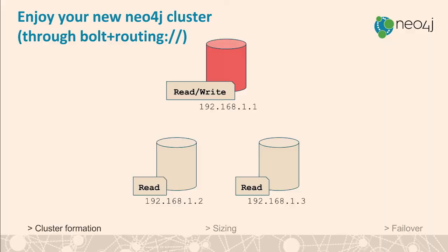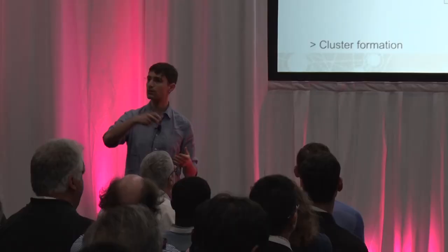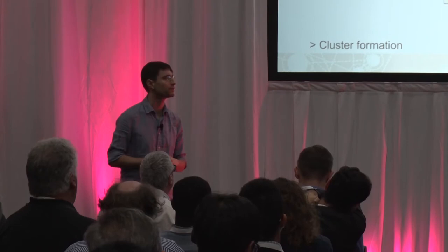The cluster will have a leader elected — that's the read and write endpoint — and two followers that are read-capable but also act as hot standbys. If the leader goes away, they'll step in and take over the leader role, so you don't lose your write endpoint. All of that is transparent, provided you use the bolt-plus-routing URI scheme in your driver. The driver will figure out who the current leader is, direct writes there, and use a least-connected load balancing strategy to spread read load across the cluster, including read replicas if you have them.